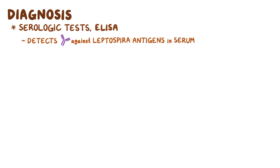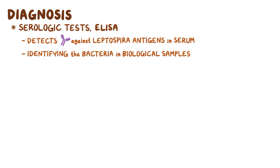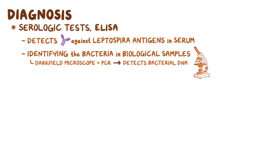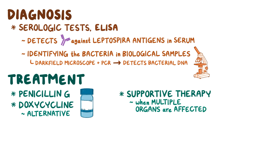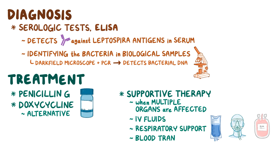Diagnosing leptospirosis is done with serologic tests like ELISA that typically consist of detecting antibodies against leptospira antigens in one serum. Another way to diagnose leptospirosis is by identifying the bacteria in biological samples. This can be done using a dark field microscope, or with PCR, that detects bacterial DNA. Leptospirosis is treated with penicillin G, and doxycycline can be used as an alternative. When multiple organs are affected, supportive therapy may be required, like IV fluids, respiratory support, and possibly blood transfusions.